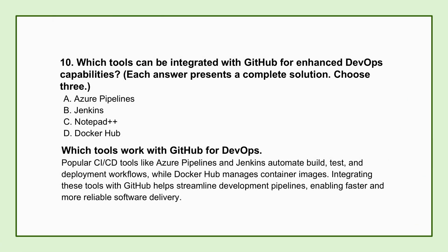We've dived into all these core GitHub features. How does GitHub play with the broader DevOps ecosystem? Which tools are commonly integrated with GitHub to enhance those DevOps capabilities? GitHub acts as a powerful central hub for development. Common integrations include CI/CD tools like Azure Pipelines and Jenkins, which connect directly with your GitHub repositories to automate builds, tests, and deployments. Docker Hub is another big one for managing container images, integrating seamlessly with GitHub Actions for automated container builds and pushes. These integrations let GitHub orchestrate your entire development lifecycle, connecting all the different pieces of your DevOps toolchain.